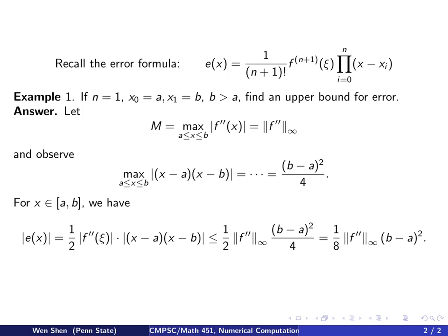Now we are ready to put everything together in the error form. So error, when you want a bound of it, you always consider the absolute value of it and try to find some quantity that will be bigger than the error. So the error formula says error equals 1 over 2 factorial, which is 1/2, and f double prime of ξ times the absolute value of this product.